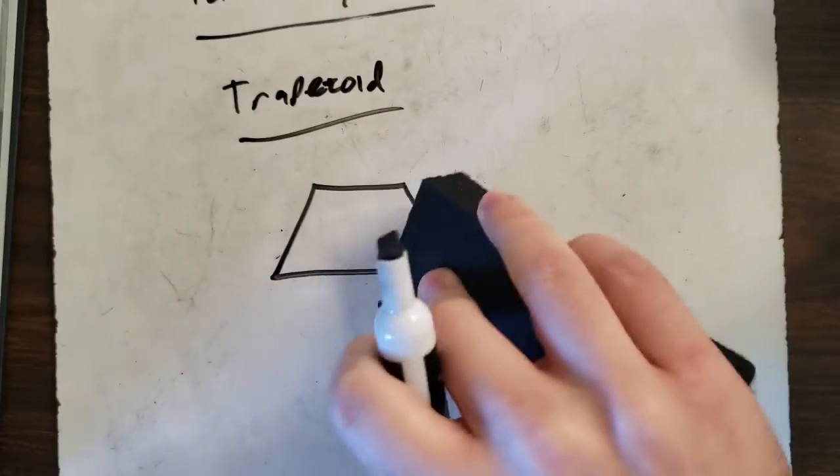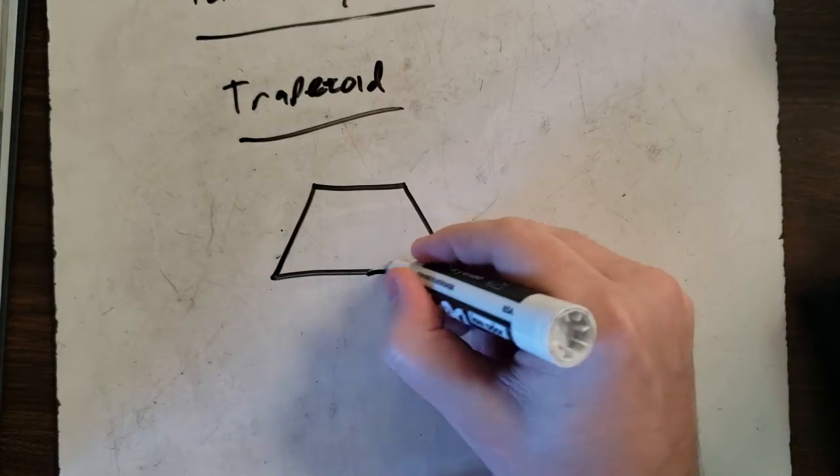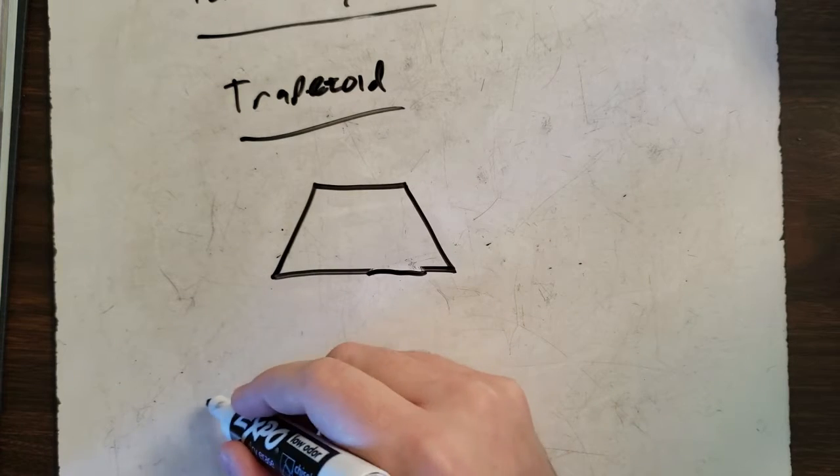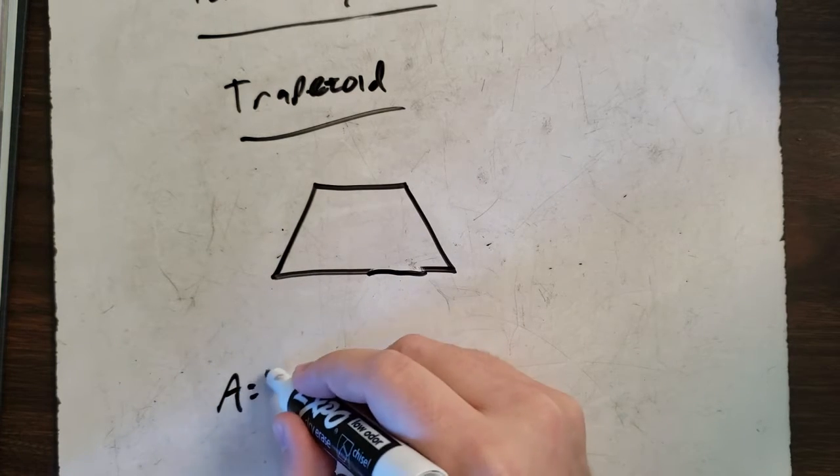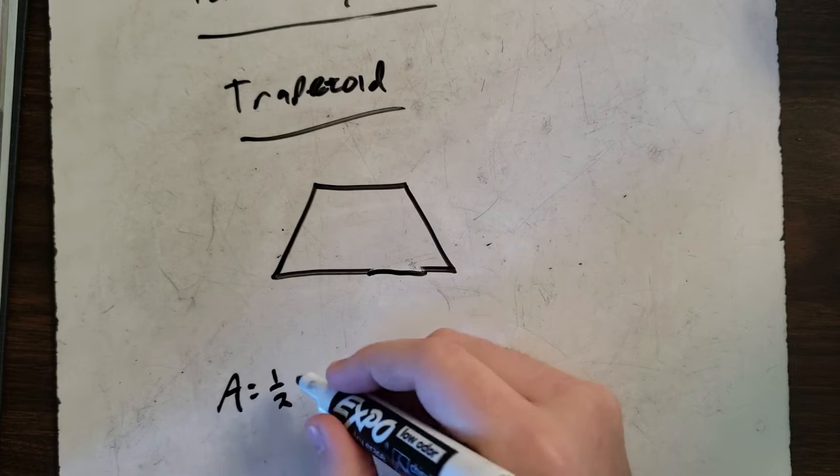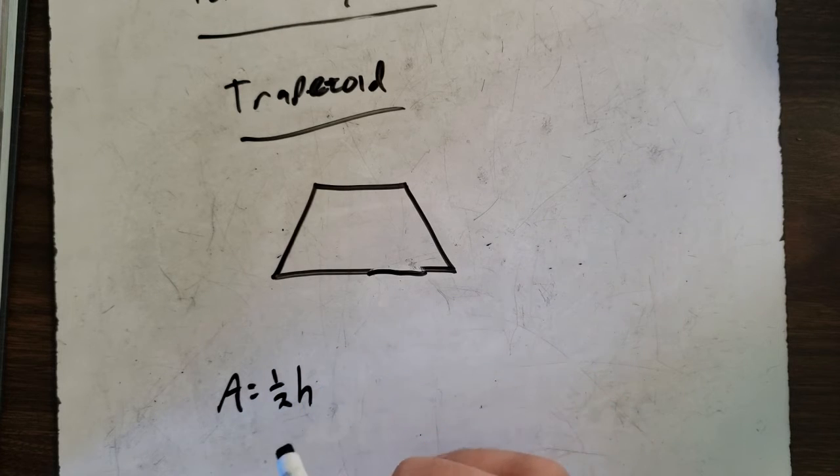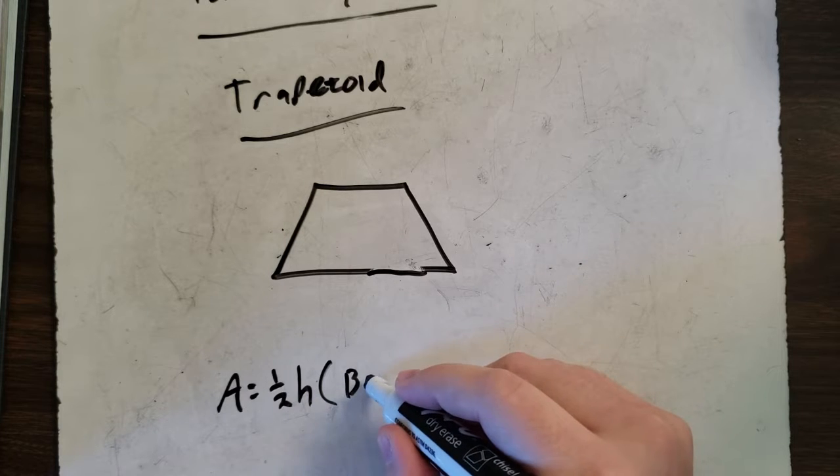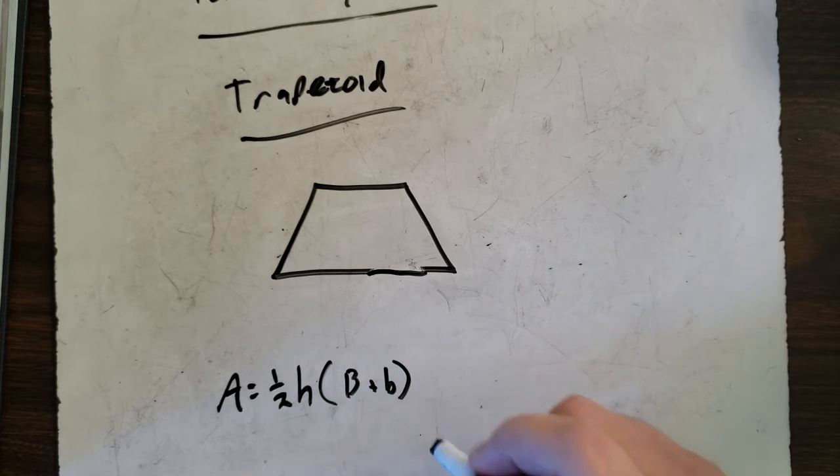For area, we have a fun little formula for area. Your area formula looks like this: A equals one-half times h, the height, times big B plus little b, the bases.